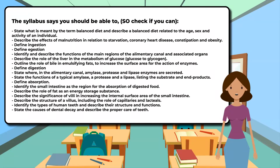Define digestion. State where in the alimentary canal amylase, protease, and lipase enzymes are secreted. State the functions of a typical amylase, a protease, and a lipase, listing the substrate and end products. Define absorption. Identify the small intestine as the region for the absorption of digested food. Describe the role of fat as an energy storage substance. Describe the significance of villi in increasing the internal surface area of the small intestine. Describe the structure of a villus, including the role of capillaries and lacteals. Identify the types of human teeth and describe their structure and functions. State the causes of dental decay and describe the proper care of teeth.